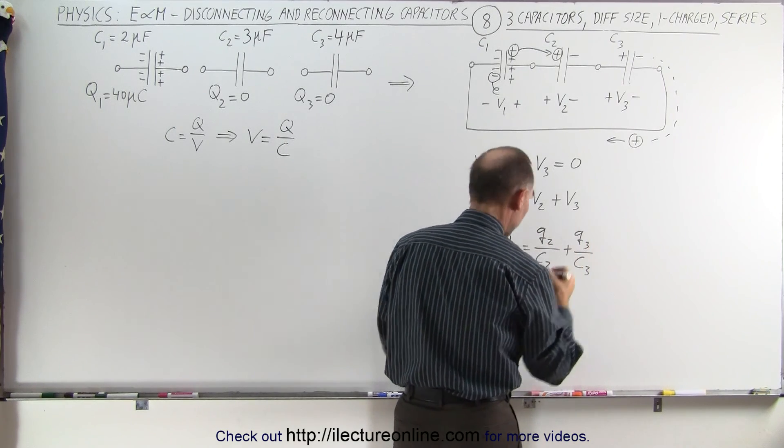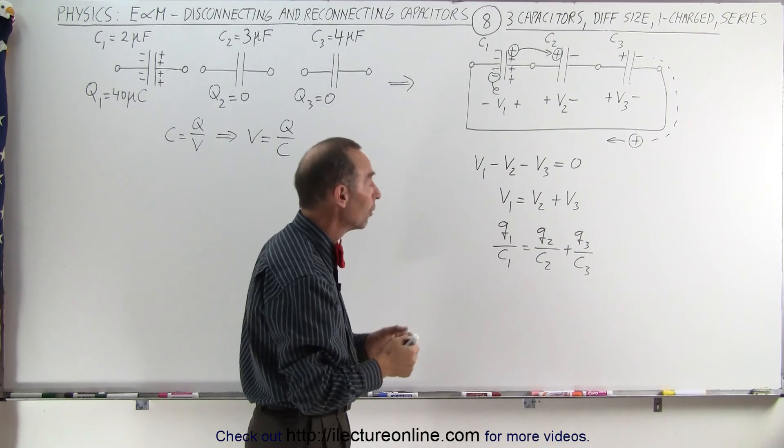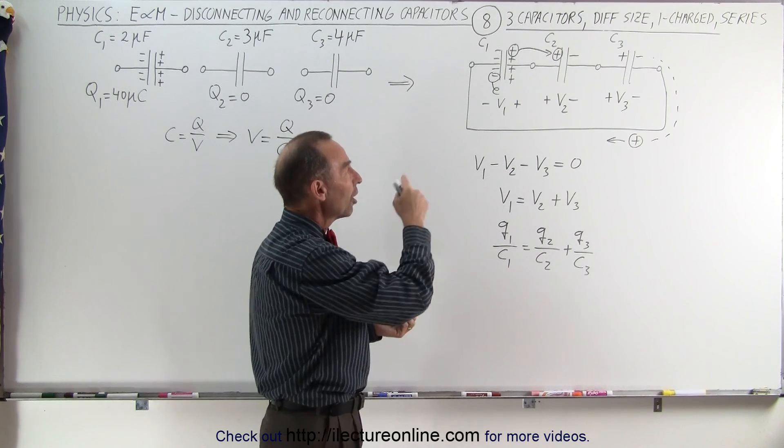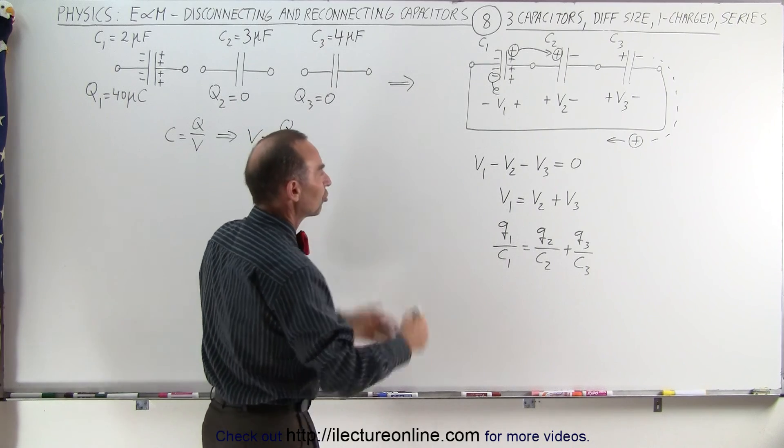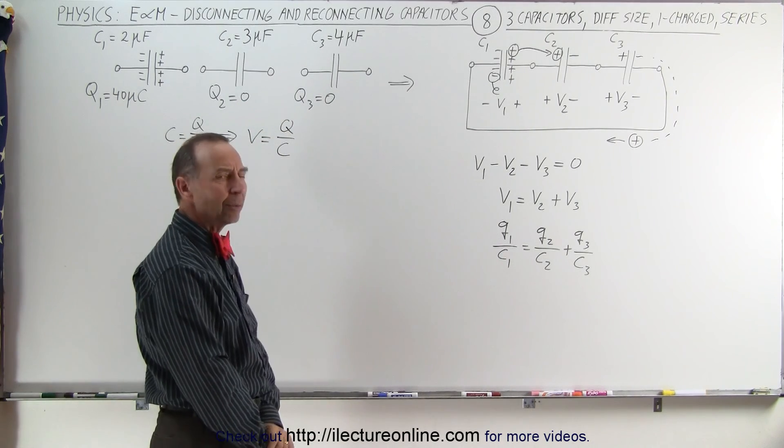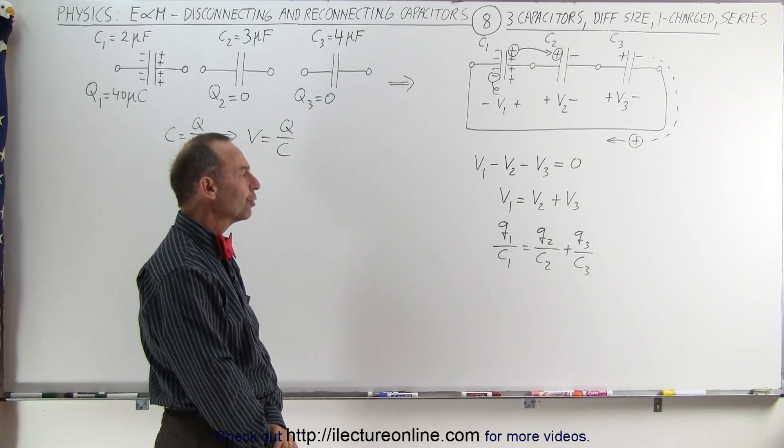Is equal to Q2 divided by C2 plus Q3 divided by C3, and Q1, Q2, and Q3, small letters Q, represent the final charge on each of the three capacitors when large Q represents the initial charge. How do we figure out what Q1, Q2, and Q3 are equal to?